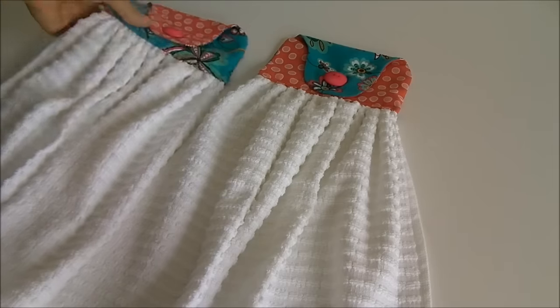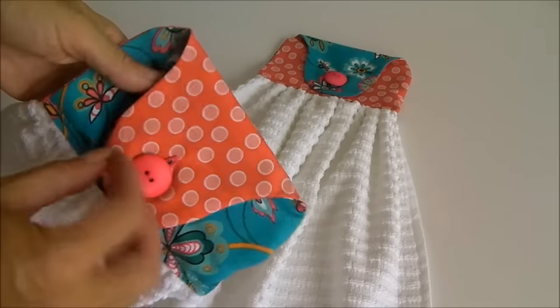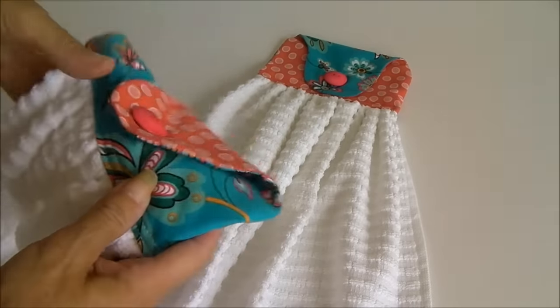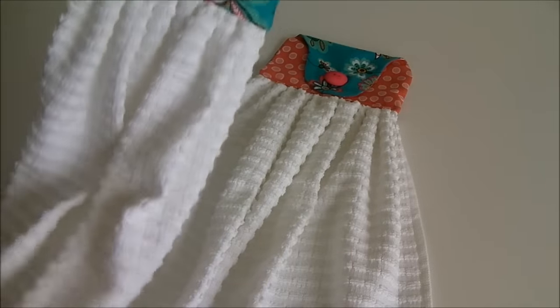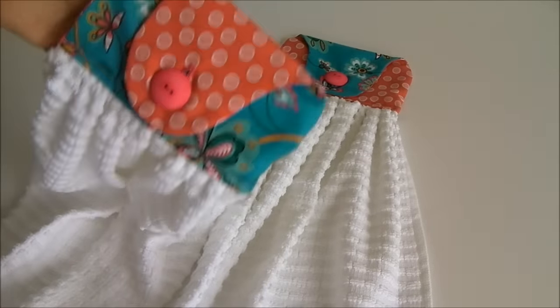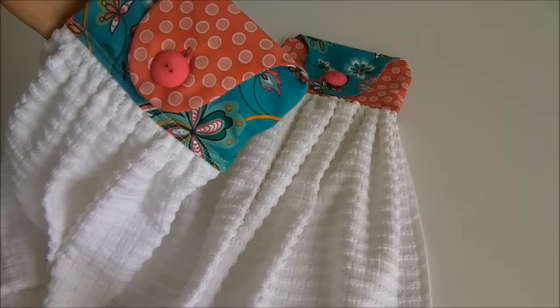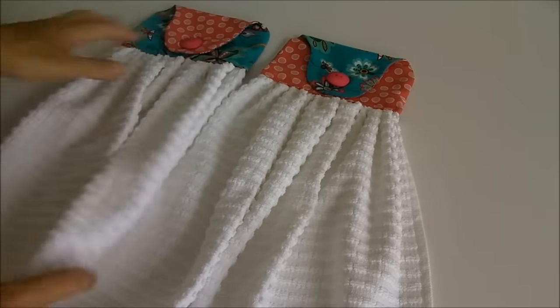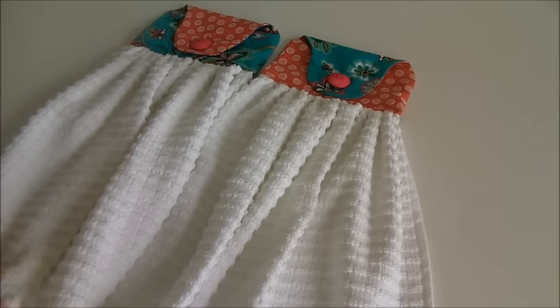So now our hand towels are complete. You can simply unbutton them, hang them over a towel rail or maybe even over the oven door handle and your kitchen towel will always be ready and exactly where you expect it. It's really nice to hang them over the oven door because then when the oven is on your towels are always nice and warm and dry. Thank you very much for watching. I hope you enjoyed this tutorial.